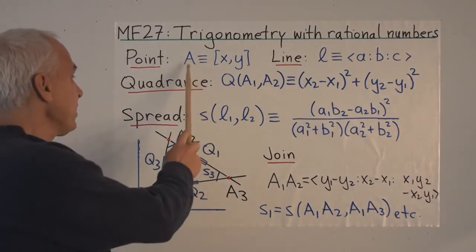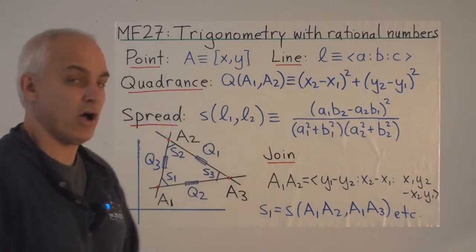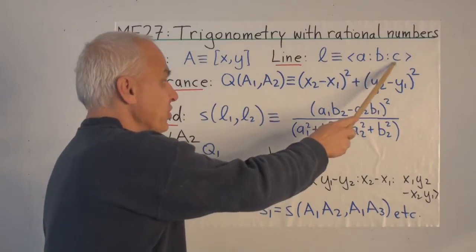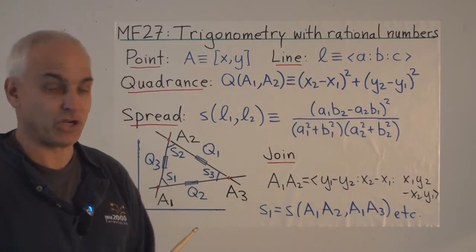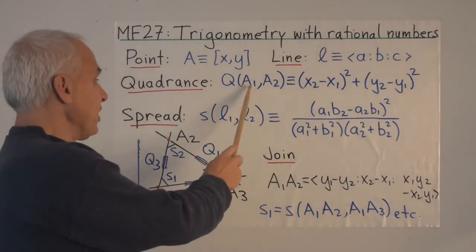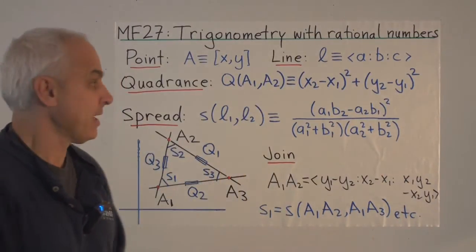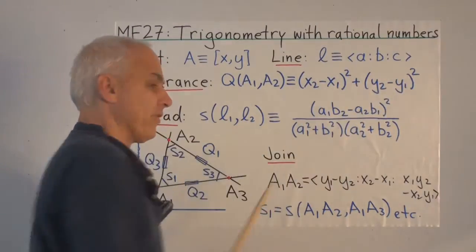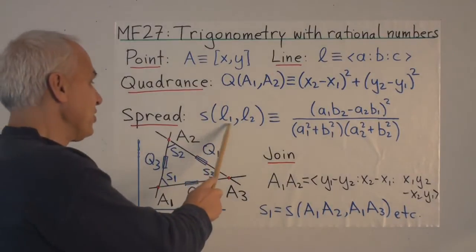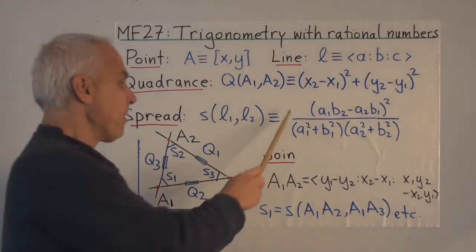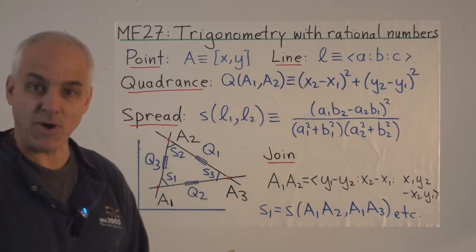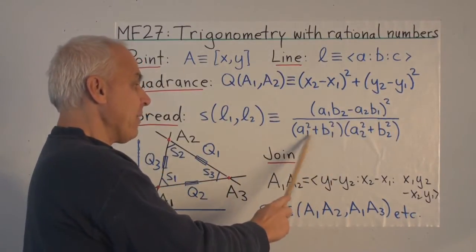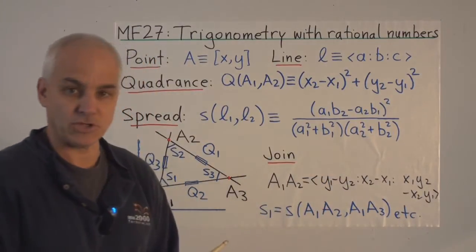A point is represented by a pair of rational numbers x and y, and a line is represented by a proportion a to b to c, also of rational numbers. The quadrance between two points a1 and a2 is the difference between the x-coordinates squared plus the difference in the y-coordinates squared. The spread between two lines l1 and l2 is given by the expression: a1·b2 minus a2·b1, all squared, divided by (a1² + b1²) times (a2² + b2²).